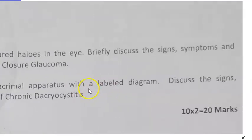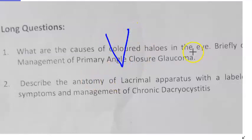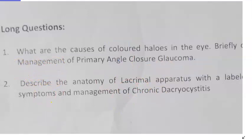On gonioscopy you look at Schwalbe's line and the trabecular meshwork. Symptoms include colored halos and vomiting, and in angle closure there will be pain. Signs include visual field defects and tunnel vision. Management involves surgery to open the angle — iridotomy, etc.